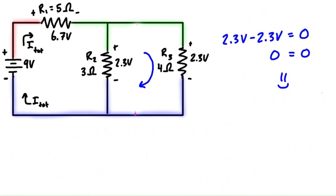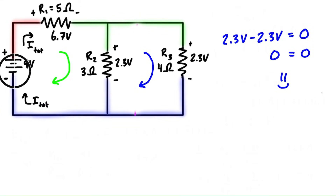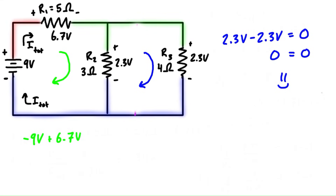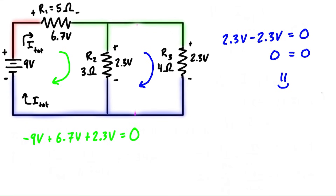Let's take a look at the loop on the left. We'll use clockwise again and start right here. Coming around, we reach the battery and we're entering the negative terminal, so we add negative 9 volts. Coming around to resistor 1, we're entering through the positive terminal, so we add positive 6.7 volts. And coming around to resistor 2, we're entering the positive terminal again, so we add positive 2.3 volts, and set it all equal to 0. Negative 9 plus 6.7 plus 2.3 equals 0 — this left-hand loop also satisfies Kirchhoff's voltage law.